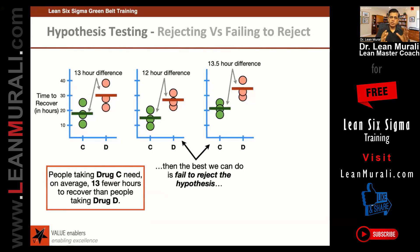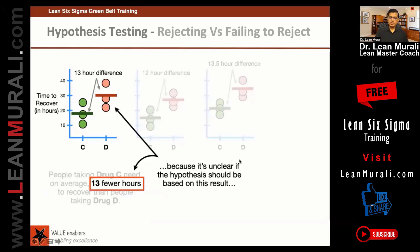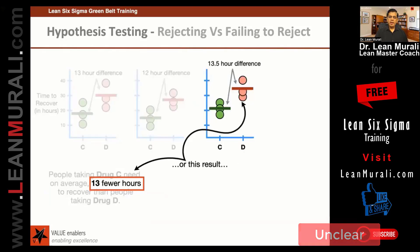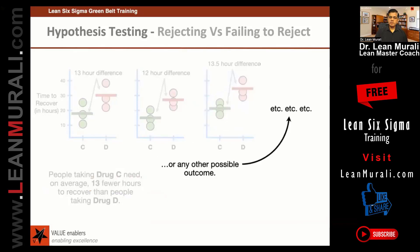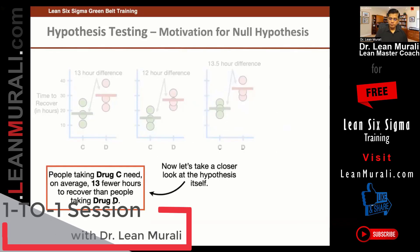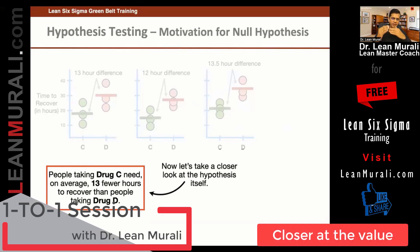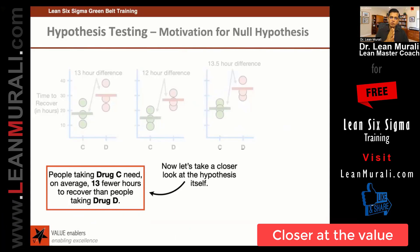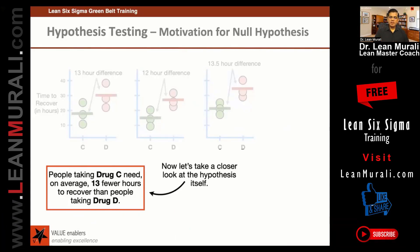So this is hypothesis testing — the rejecting versus failing to reject — because it is unclear if the hypothesis should be rejected based on the result. It could be either this or this, or probably any other value. Maybe looking closer at this: I am deliberately showing closer values because that is where the borderline comes, and we use a statistical test to really differentiate.